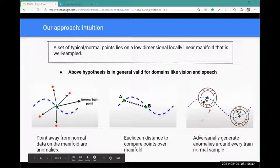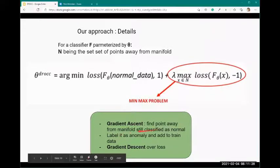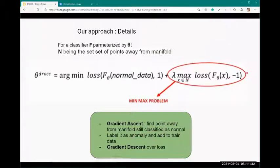The mathematical approach classifies points around the normal data point as anomalies. This is the normal loss function which we use in any machine learning problem - we minimize the loss around the normal data. Then this is a min-max problem, wherein we are maximizing the loss. This is a gradient ascent problem. We use this method to add more anomalies to our already existing training dataset. We find a point away from the manifold still classified as normal. The first term minimizes loss over the normal training data. This min-max problem tries to find a point X which is more than a threshold distance away from the manifold but still classified as normal.